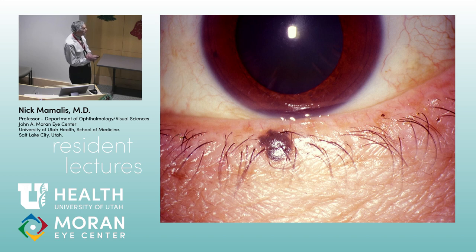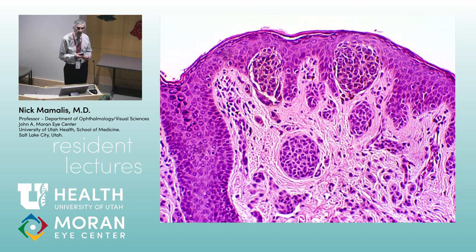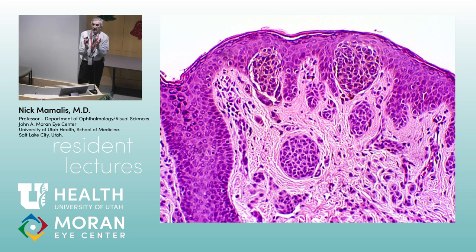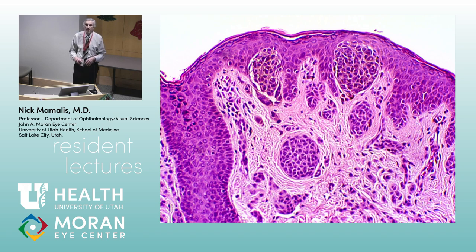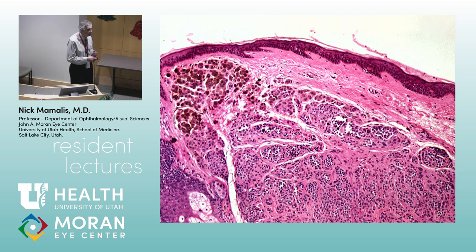External photo of the lower lid shows a pigmented lesion. There are still lashes, the lid margin is relatively intact — probably benign. Pathology shows nests of cells — a nevus. More specifically: there's a junctional component and also cells in the dermis, so this is a compound nevus. When rating nevi: if melanocytes are only at the junction, it's a junctional nevus; if at the junction and in the subepithelial tissue, it's a compound nevus.